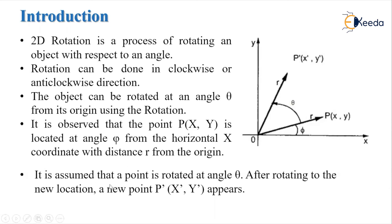It is assumed that point P is rotated at an angle theta to get a new location, which we call P'. So we get the new point P' with coordinates x', y' — the new coordinates of this point P.